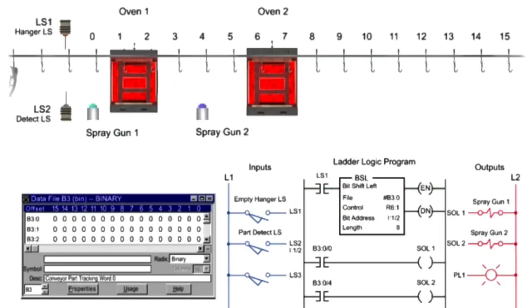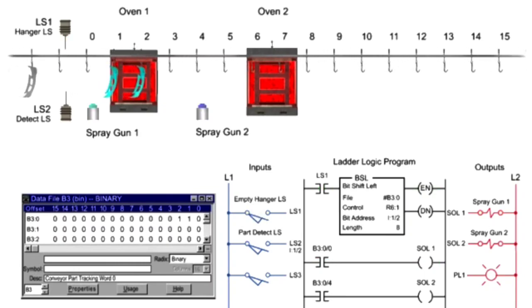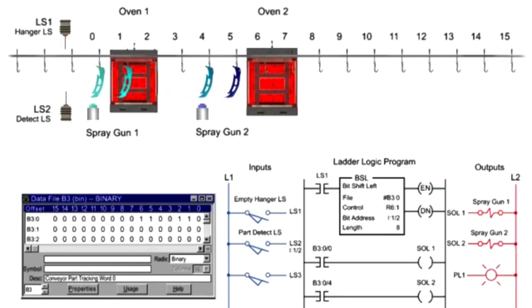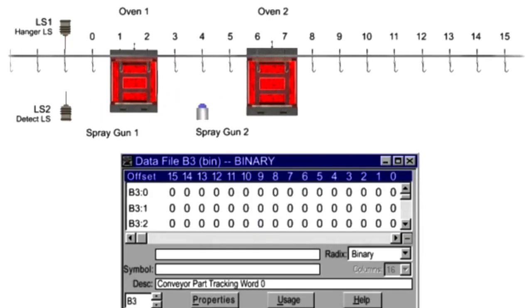An example of the bit-shift-left instruction includes tracking parts for a spray-painting application. Positions 0 through 15 of the paint line match the length of the word in the bit-shift-left instruction.